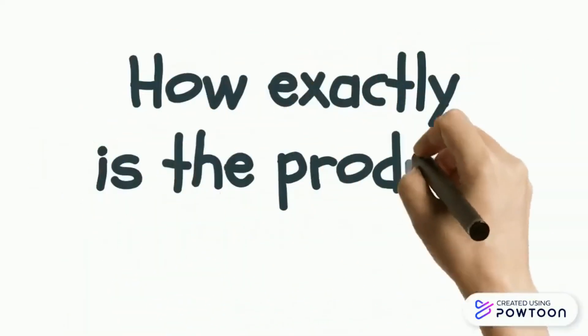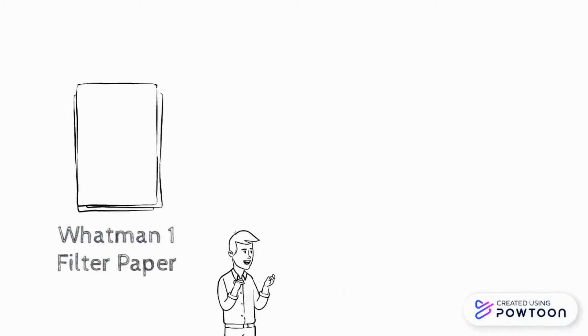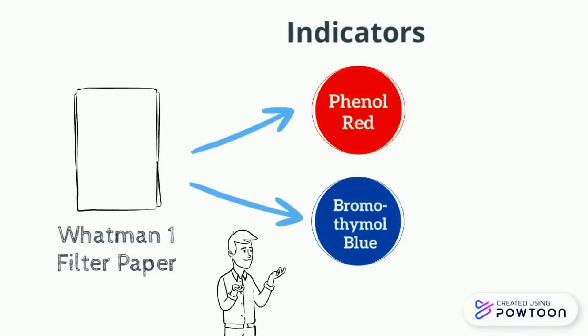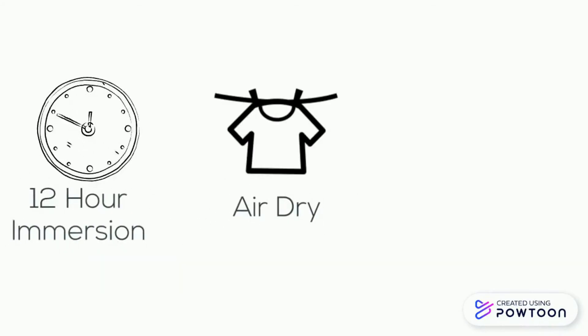How exactly is the product made? The main material that we'll use to create the product is Whatman 1 filter paper, which is then dipped into the correct indicators, two of which are Bromothymol Blue and Phenol Red. They're dipped in the indicators which have been solubilized in ethanol, and then we have their pH adjusted accordingly. The paper is then immersed for 12 hours before being air-dried. The paper is then stuck onto a sticker paper to allow it to adhere towards the surface, and then the product is done.